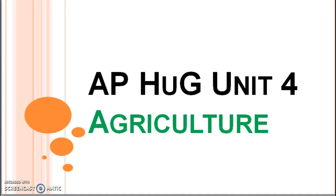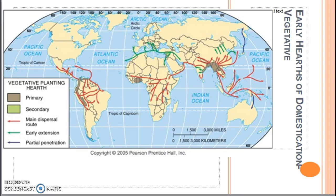Geographers believe that agricultural innovation occurred and diffused from multiple hearths, or places of origin. According to Carl Sauer, humans first learned how to grow plants in Southeast Asia through vegetative planting. Vegetative planting is the process of simply cutting off a stem of another plant or by dividing up the roots of a plant. Southeast Asia has a climate and terrain that supported the growth of root plants that are easily divided — like taro, yams, bananas, or palm.